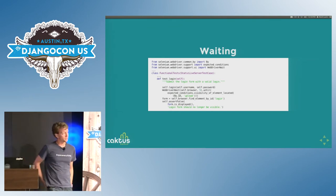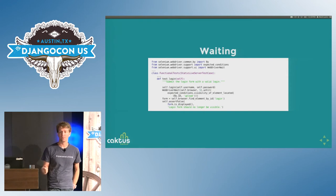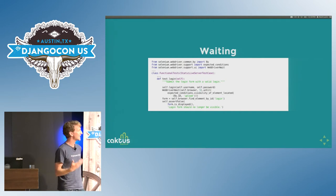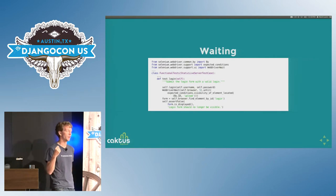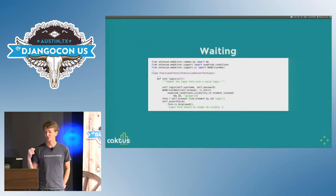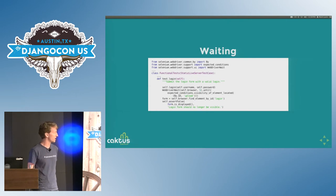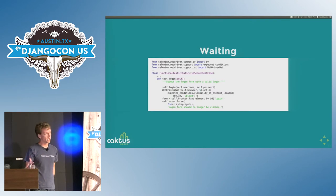There are also implicit waits available in Selenium — those just wait for a set amount of time. Writing explicit assertions on how to wait can get tricky, so implicit waits are a cheap fallback. But if you say 'wait one second' and do this in many tests, you've added a second to each test run — and it really starts to add up. These tests aren't particularly fast to begin with.